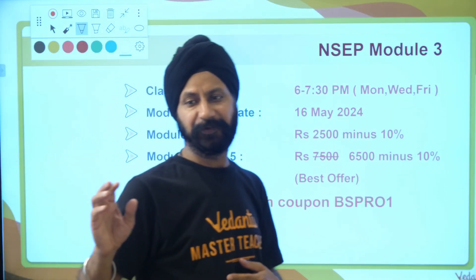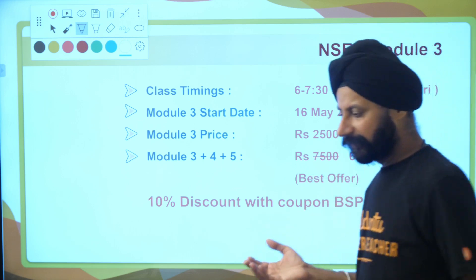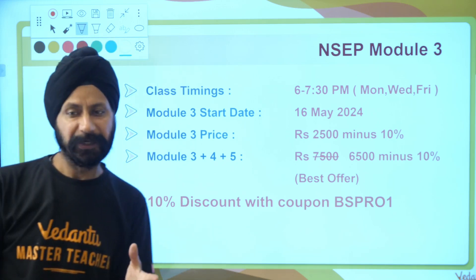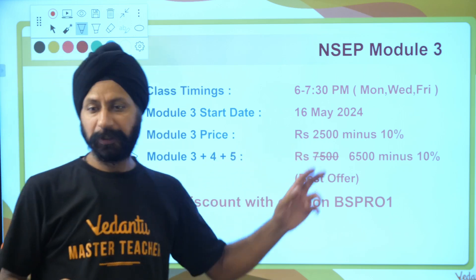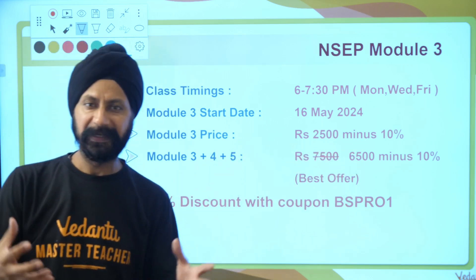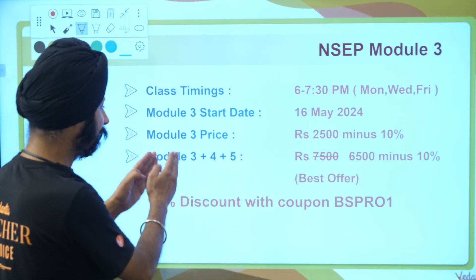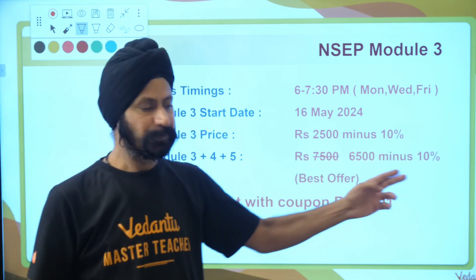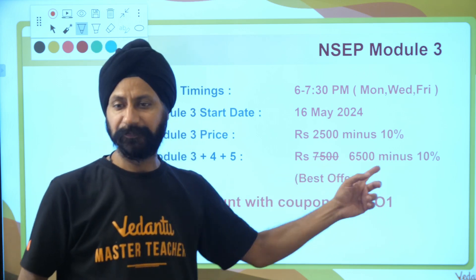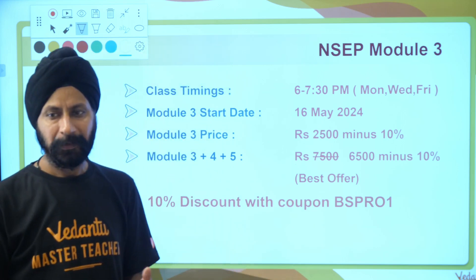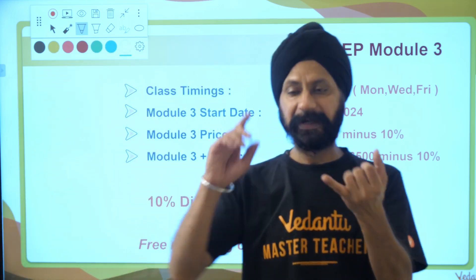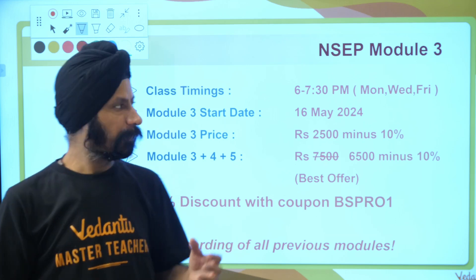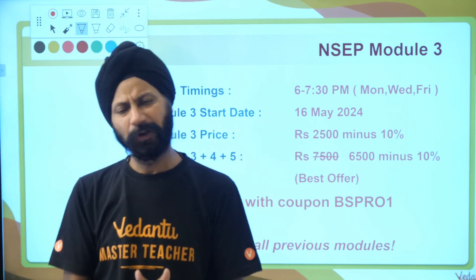So this is module 3 and the prices are very cheap. First of all, the class timings are Monday, Wednesday, Friday, 6 to 7:30 PM. 16 May the classes started and there is a study break. Some students have other engagements and we've given one week of break right now. Module 3 prices, only 2,500 minus 10% off with this coupon. You apply coupon BSPRO1, you get 10% off. You save 250 rupees. A better deal is to buy 3, 4, and 5. So there are three modules. You can get 1,000 rupees discount. But then in addition, you get 10% off. Total is 5,850. You also get the recordings of all the previous modules, doubt clearing on Telegram group, tests on Sundays, assignments after each class. So a lot of things. So join this.